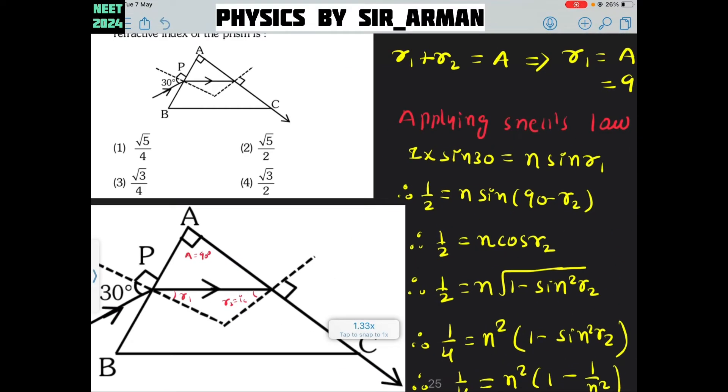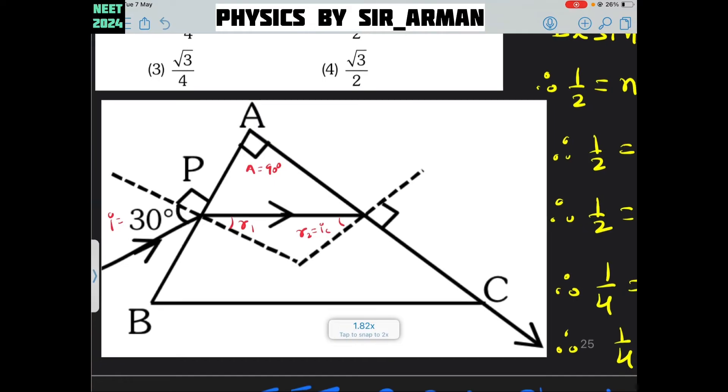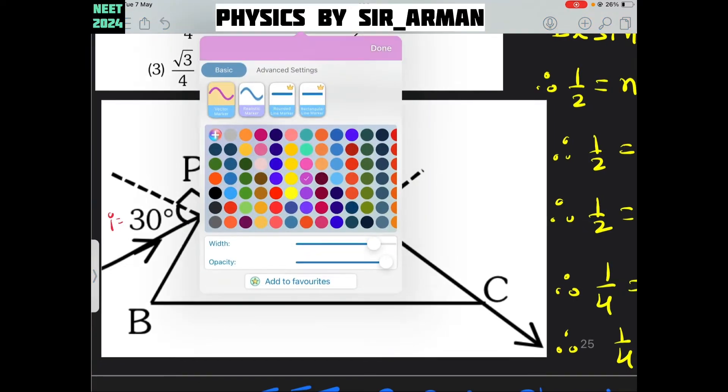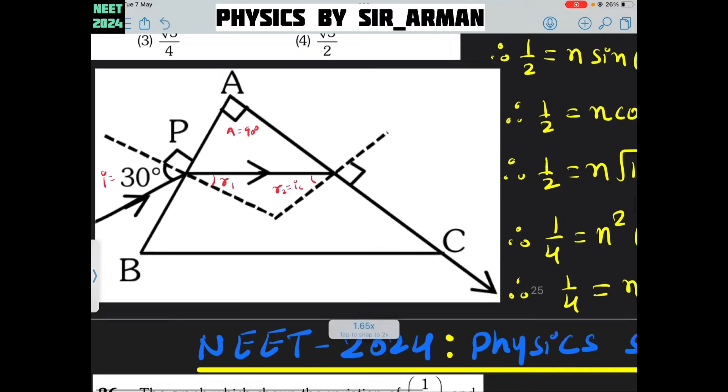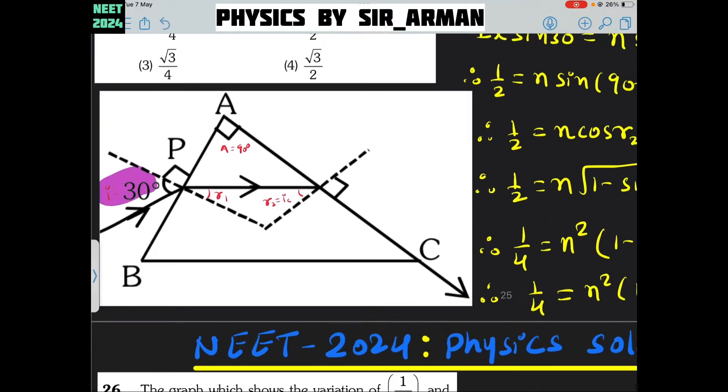First let us try to analyze this figure. Here a light is entering at an angle 30 degrees which is labeled here. Then it enters here and the light goes like this and it moves parallel to the surface. When the light moves parallel to the surface, the angle of emergence is 90 degrees. The emergent angle is 90 degrees and also in the given question this angle is 90.